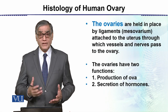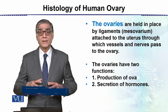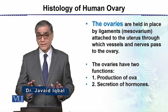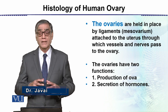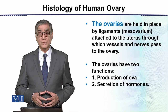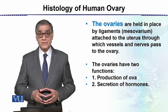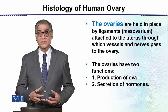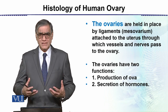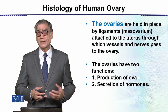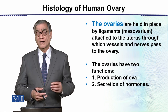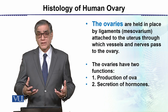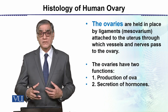The ovaries are held in place by a ligament which we call the mesovarium. This is attached to the uterus, through which vessels and nerves pass to the ovary. Since it is a very important organ, there is both blood supply and nerve supply, because without these two things there is no life of any organ.